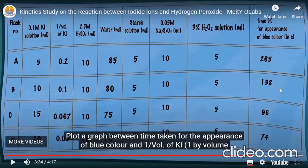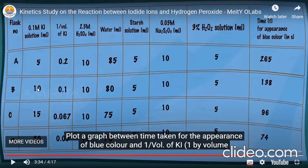We have four conical flasks A, B, C, and D. The requirements are: 0.1 molar potassium iodide solution, 2.5 molar sulfuric acid solution, distilled water, starch solution, 0.05 molar sodium thiosulphate solution, and 3% hydrogen peroxide solution. In flask A we add 5 ml of 0.1 molar KI, in B 10 ml, in C 15 ml, and in D 20 ml. In all flasks we add 10 ml of 2.5 molar sulfuric acid.